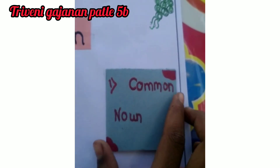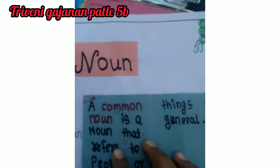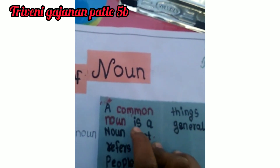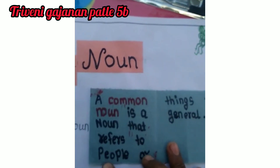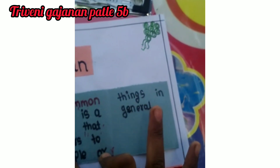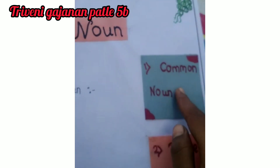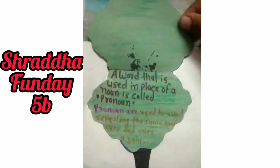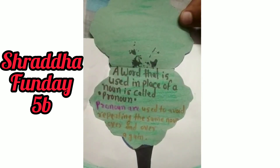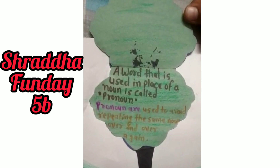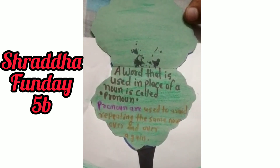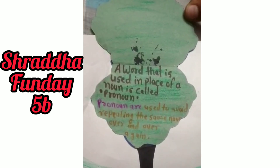Types of noun. Common noun. A common noun is a noun that refers to people or things in general. Pronoun — a word that is used in place of a noun is called a pronoun. Pronouns are used to avoid repeating the same noun over and over again.